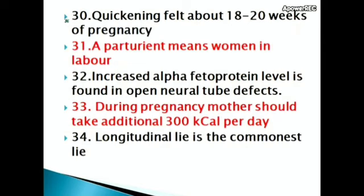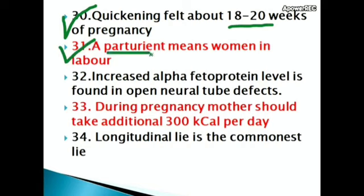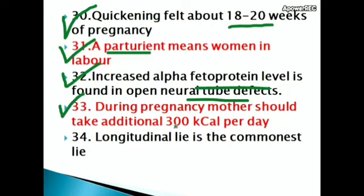Quickening is felt at about 18 to 20 weeks of pregnancy. A parturient means a woman in labor. Increased alpha-fetoprotein level is found in open neural tube defects. During pregnancy, the mother should take an additional 300 kilocalories per day.